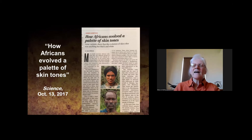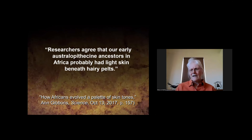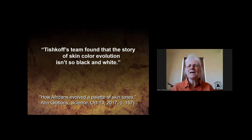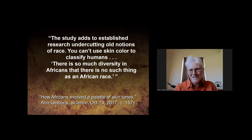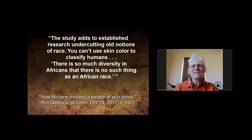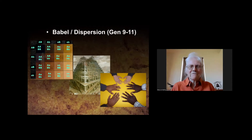There are real examples of medium-skin-color parents having twin girls — one very dark, one very light. A 2017 Science article on African skin tone diversity noted that researchers agree early ancestors in Africa probably had light skin beneath hairy pelts, and that 'the story of skin color evolution isn't so black and white.' The study 'undercuts old notions of race' — you can't use skin color to classify humans. We believe the various skin colors were established in populations after the dispersion at Babel.